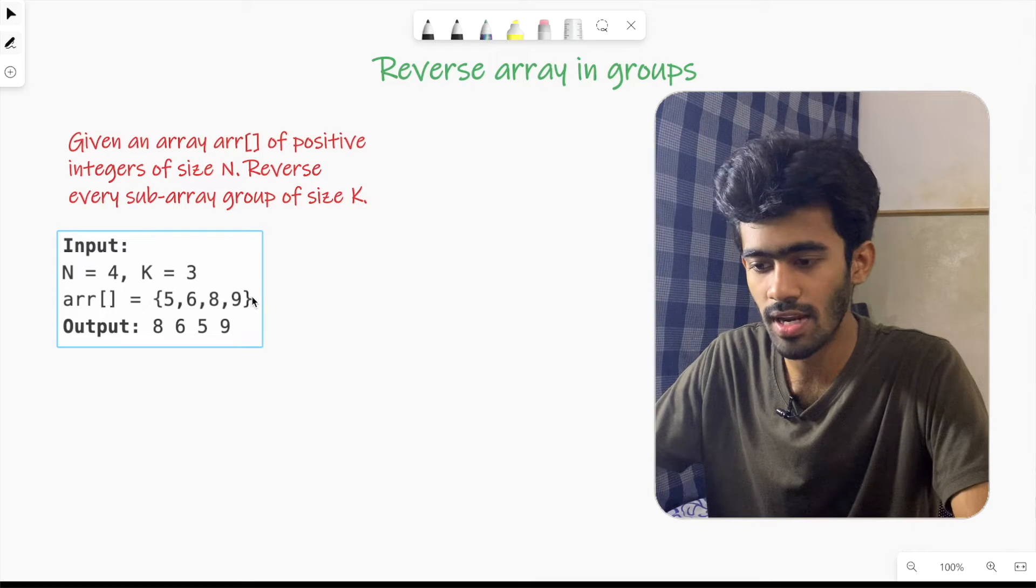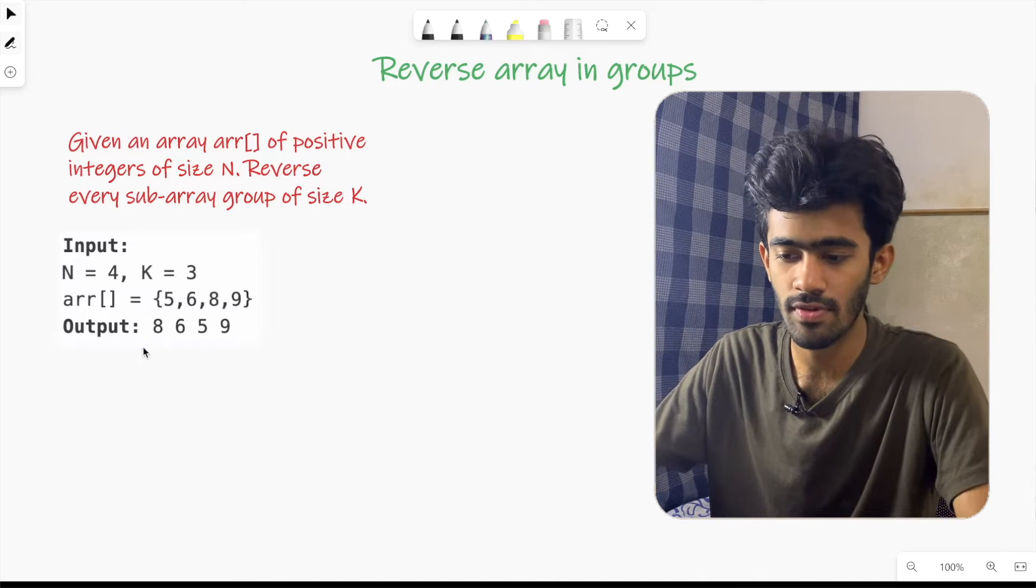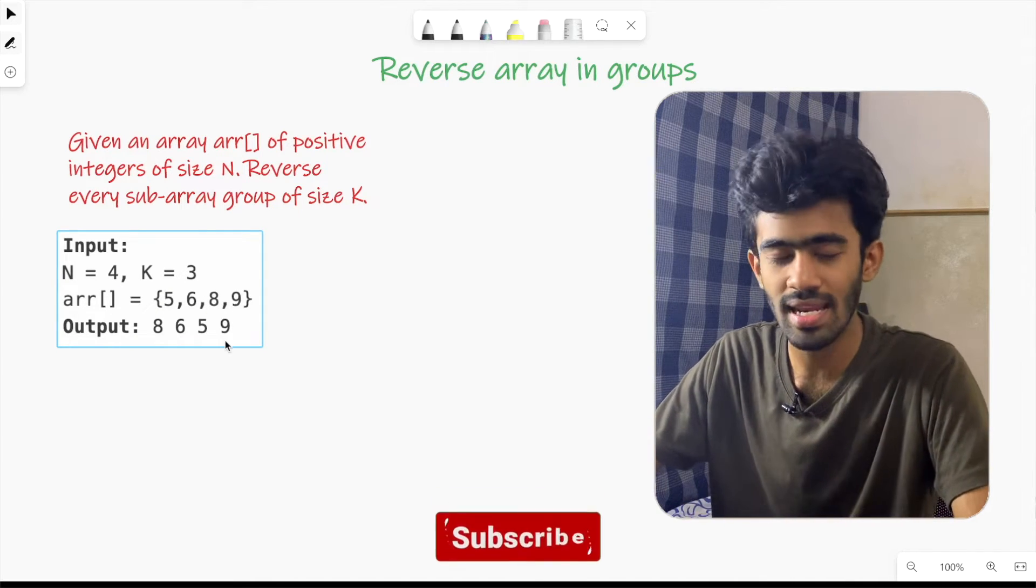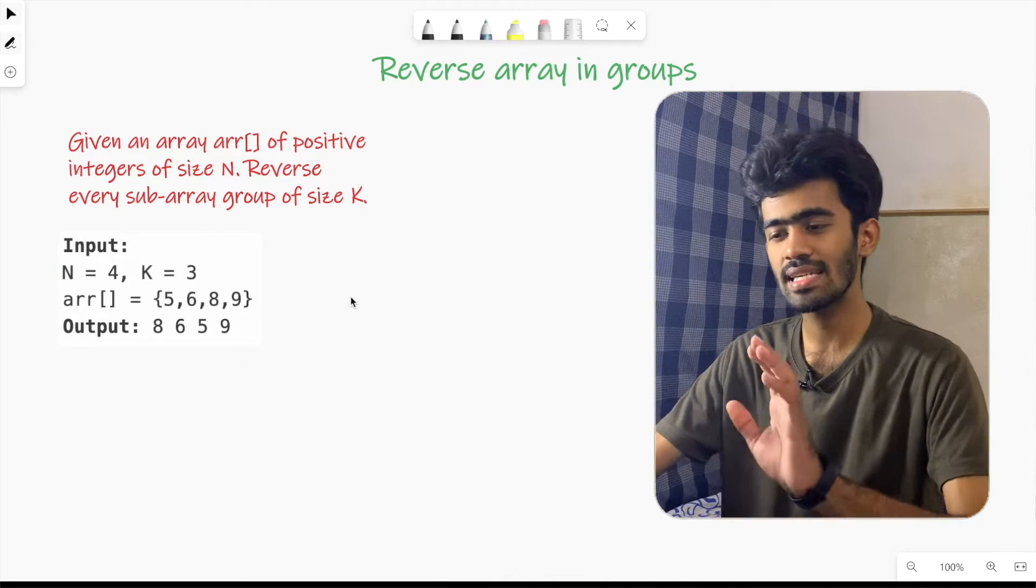5, 6, 8 is the subarray. We need to reverse it. I'll reverse it. That's it. Then you will reverse the remaining elements.